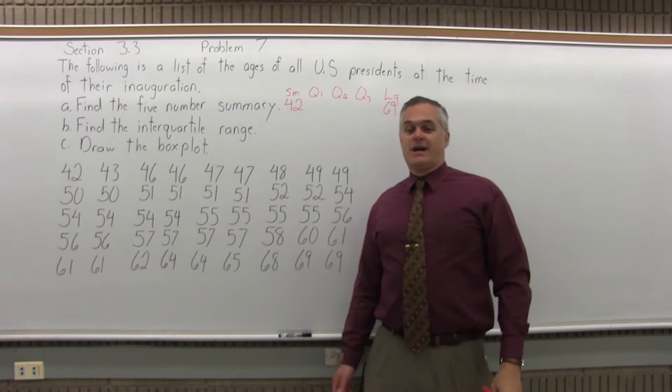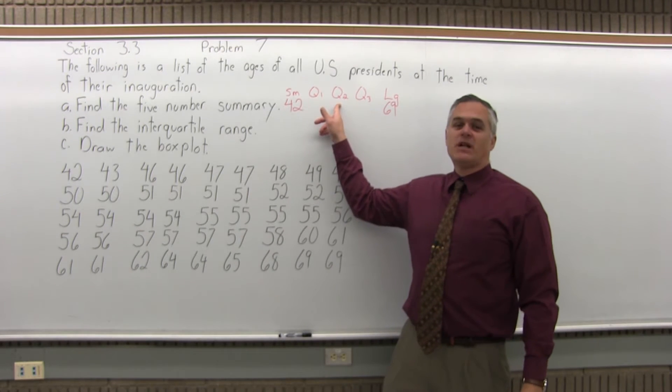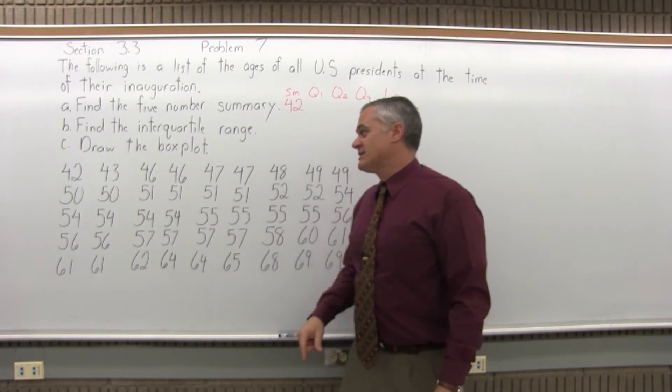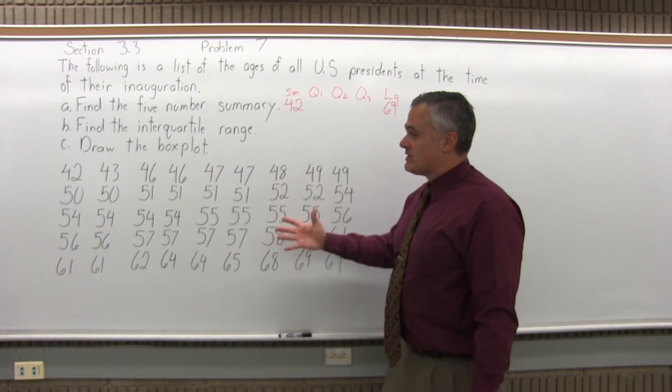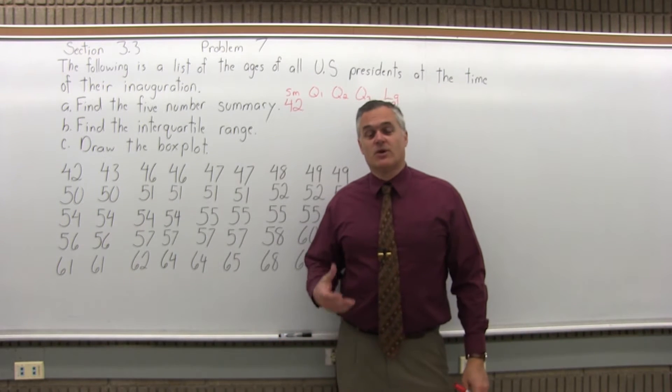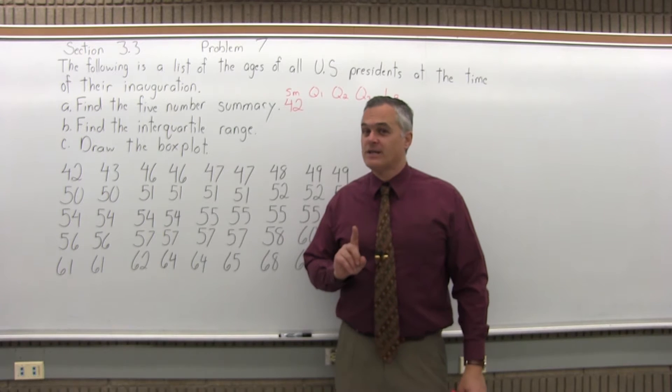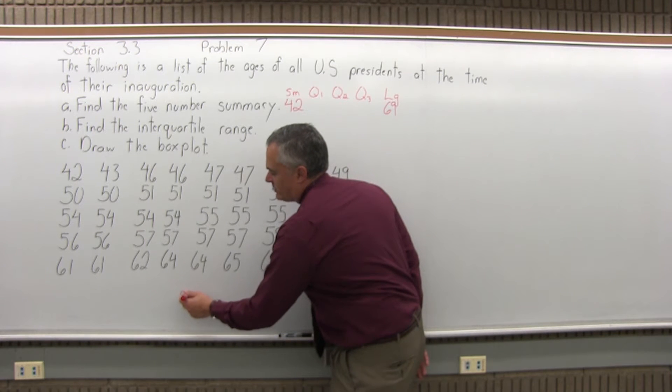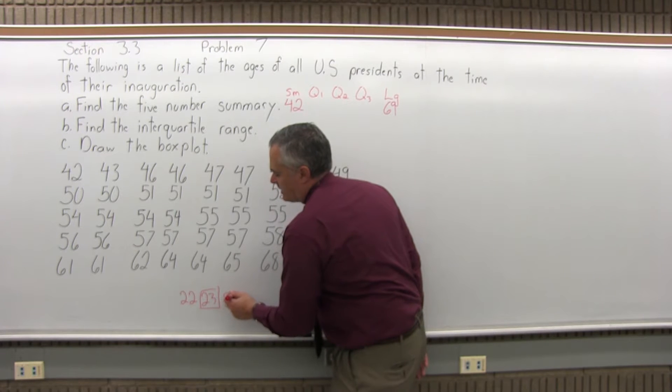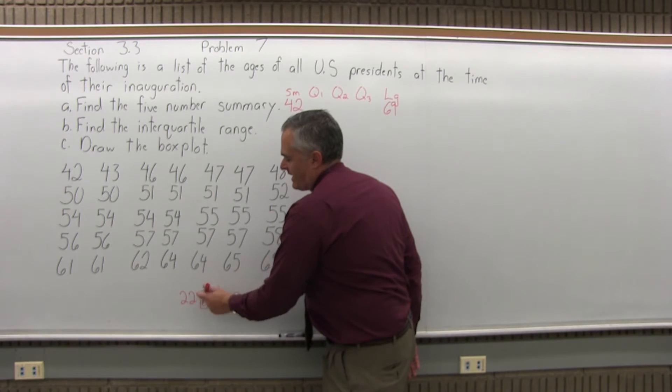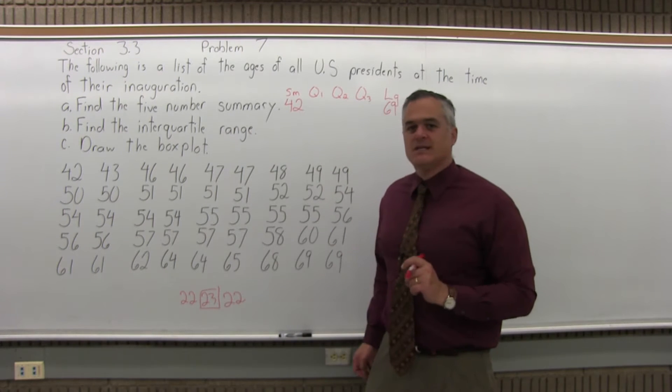Now, for the quartiles, you have to find the second quartile first. That's the median or midpoint of the list. There are 45 values in this list. We have five rows of nine, so there really are 45. Since 45 is an odd number, an odd amount of data will have one data value right in the center. For 45, you should have 22 data values, the 23rd position will be the median, and then 22 more data values.